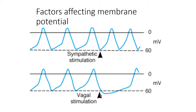Once vagal stimulation is given, the membrane potential gets hyperpolarized to even less than minus 60 millivolts, and depolarization occurs very slowly, leading to fewer action potentials per minute. Comparing the graph, while normal activity shows one electrical event per five lines, vagal stimulation requires nearly ten lines for one electrical event. Therefore, the number of impulses produced by the pacemaker tissue decreases with vagal stimulation, and the heart rate is decreased.